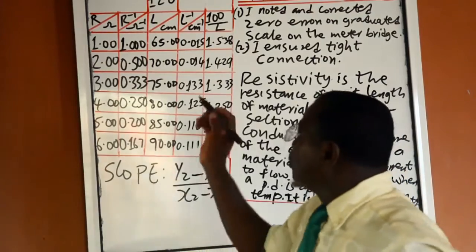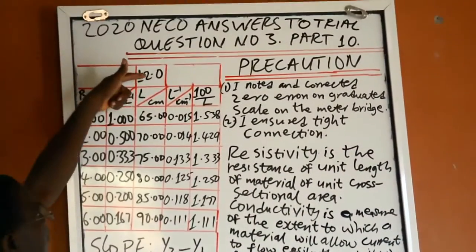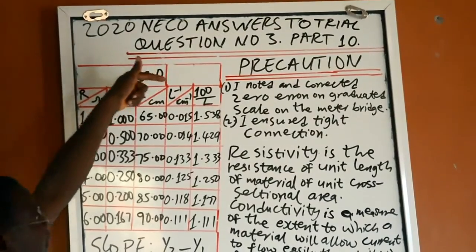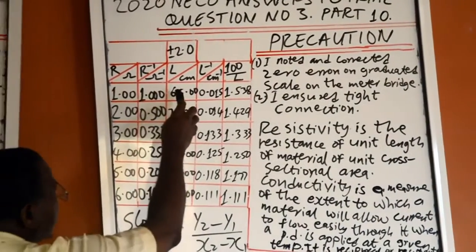Now, this is the observation table. If you observe, I wrote plus or minus 2 here. The values will vary. The value of this top column will vary.